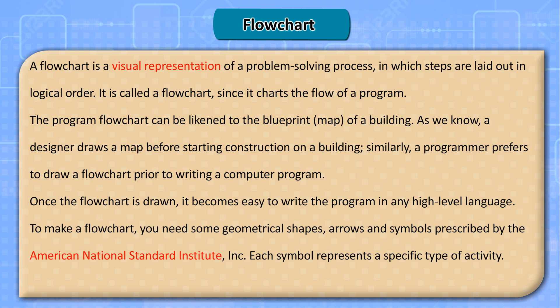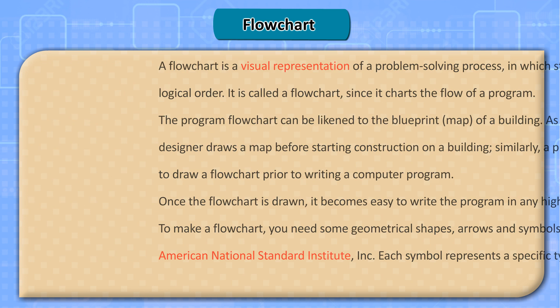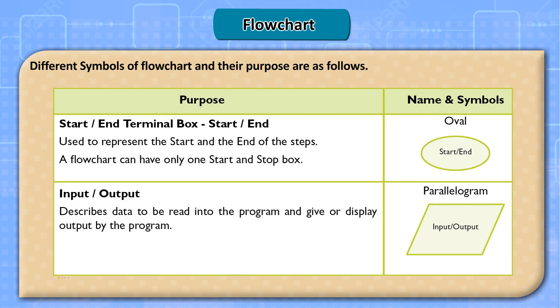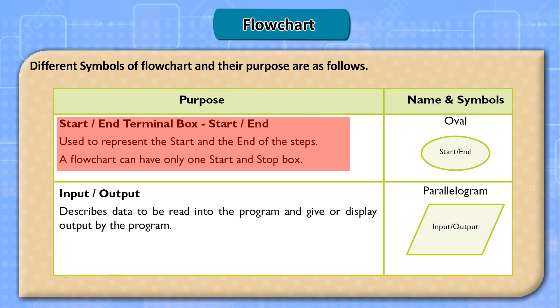Once the flowchart is drawn, it becomes easy to write the program in any high-level language. To make a flowchart, you need some geometrical shapes, arrows, and symbols prescribed by the American National Standard Institute. Each symbol represents a specific type of activity. The start/end terminal box — an oval shape — is used to represent the start and end of the steps. A flowchart can have only one start and one stop box.